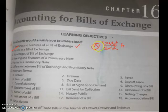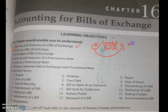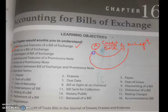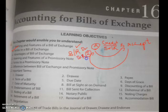The second journal entry is: B is not in a position to give cash immediately, so A draws a bill on B. A is the drawer; B is the drawee who must accept the bill. B signs and accepts the bill and returns it to A. At that point, A passes the second entry: bills receivable account debited to B account.